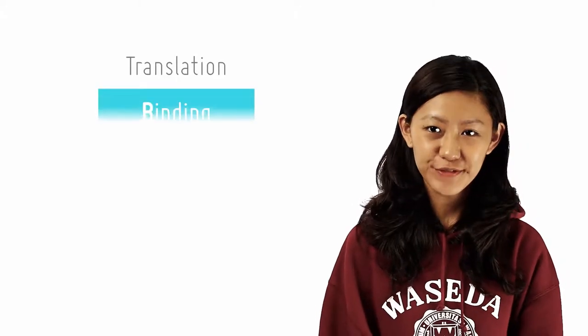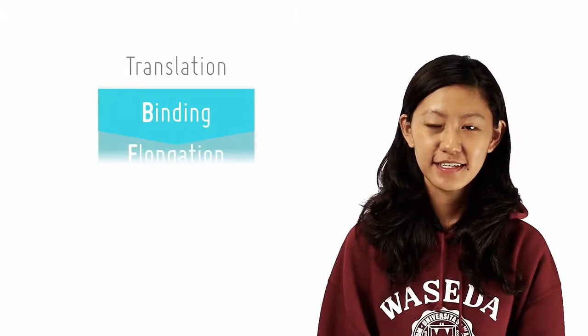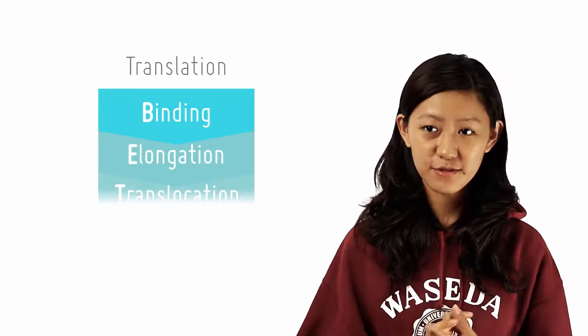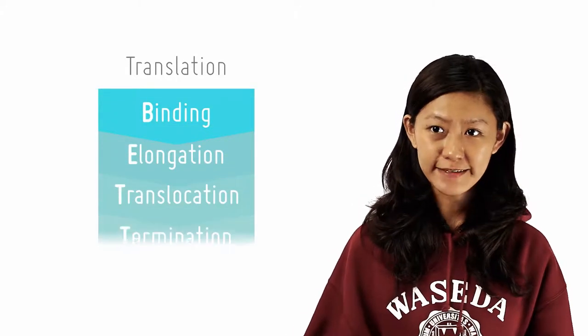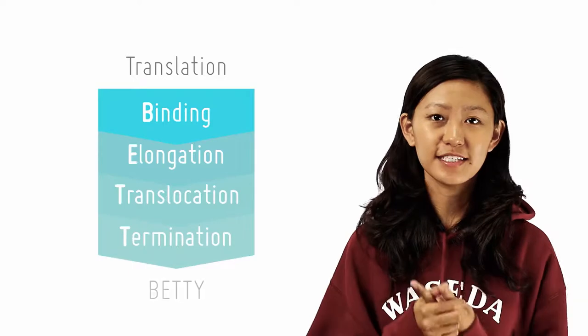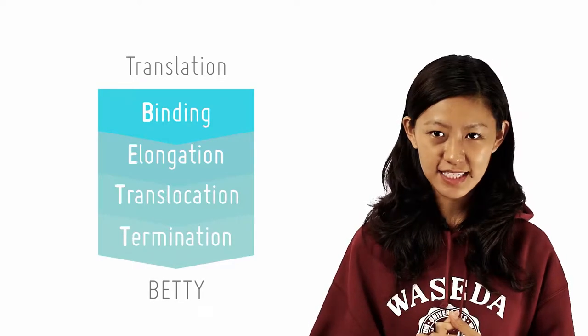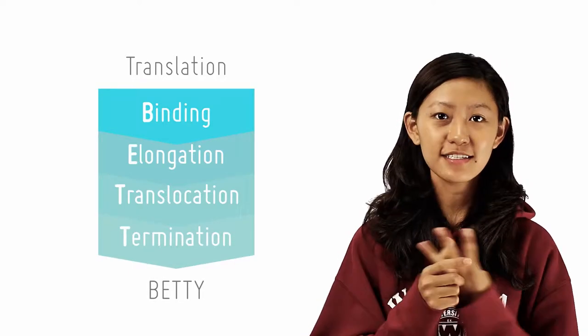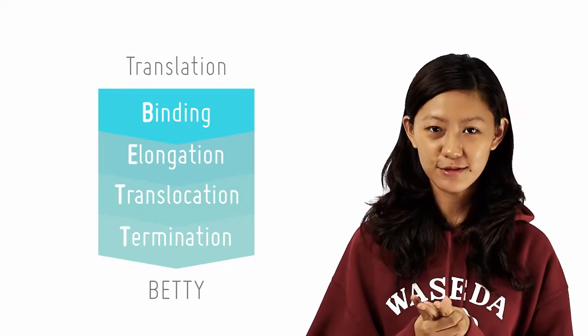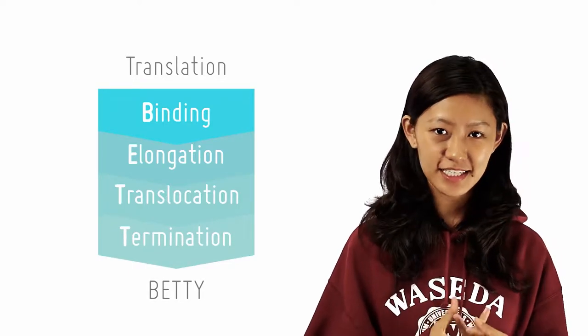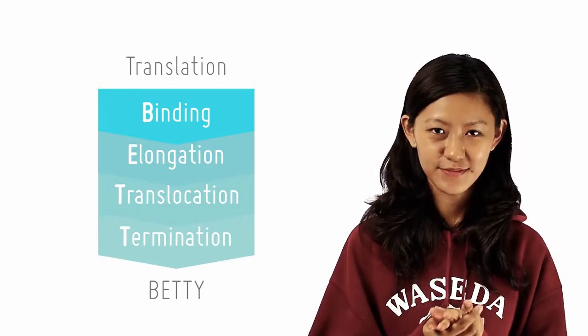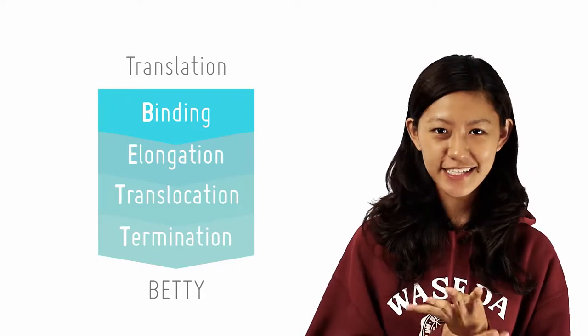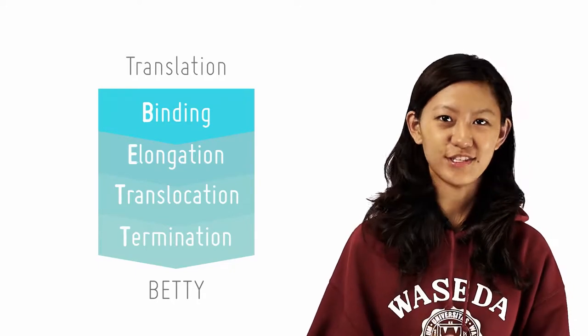Translation comprises four phases: the binding of ribosome to mRNA, the elongation of the polypeptide chain, the translocation of ribosome, and finally termination. You can use B-E-T-T for short.